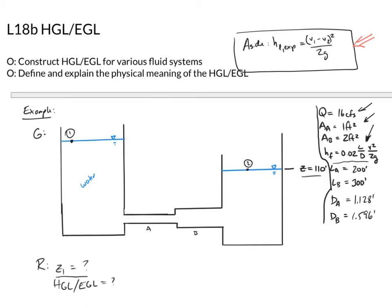We want to find the elevation of reservoir one and draw the HGL and EGL. We have minor losses at two pipe expansions and an entrance loss, which we'll ignore for now — its value is zero in our calculations, though I'll note it on the diagram.